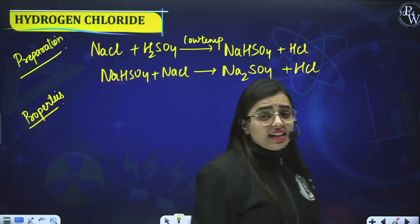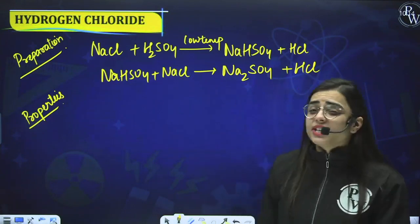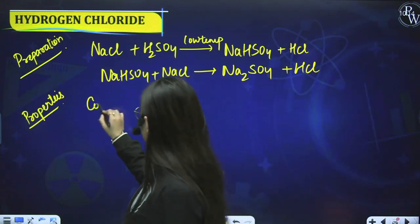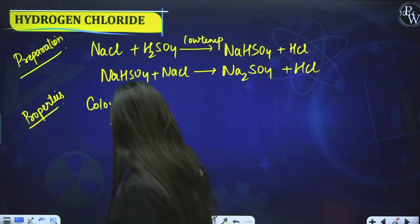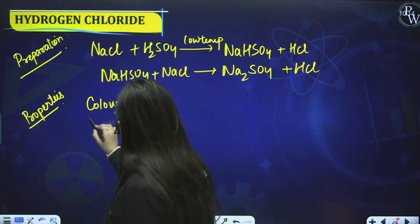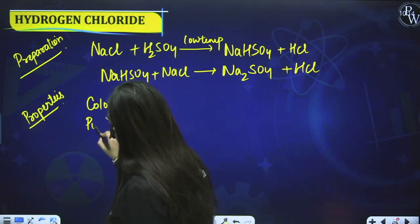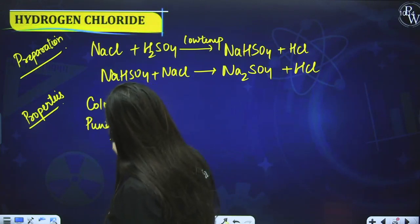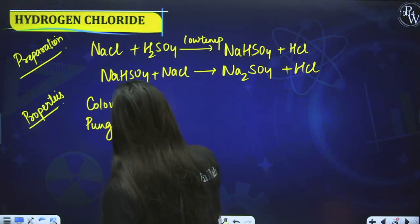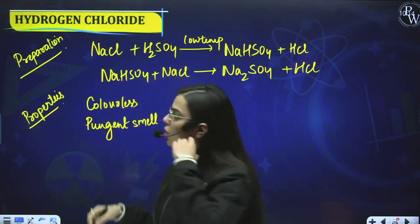Properties of Hydrogen Chloride: it is a colourless gas with a pungent smell. It can be easily liquefied. When frozen, it converts into a white crystalline solid.